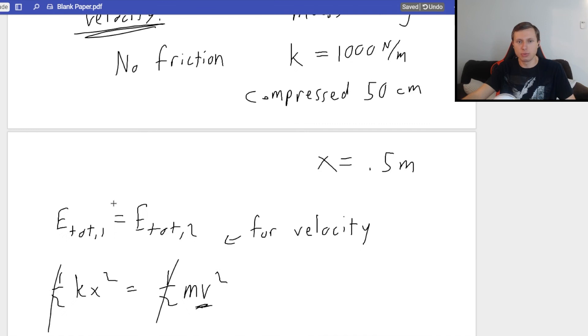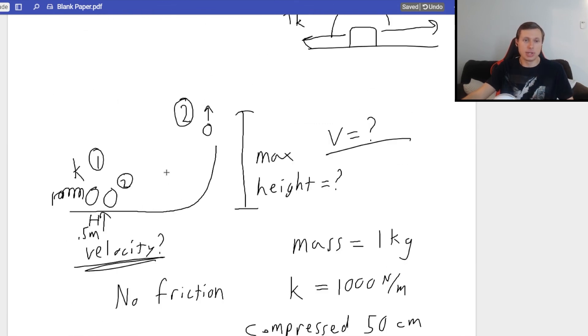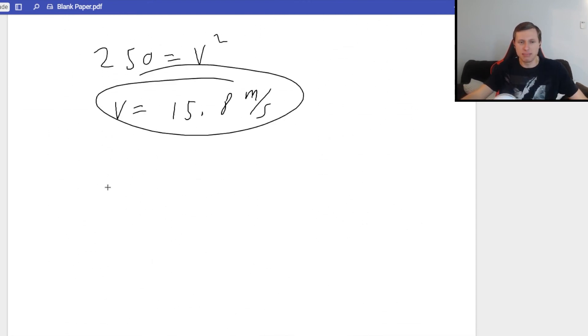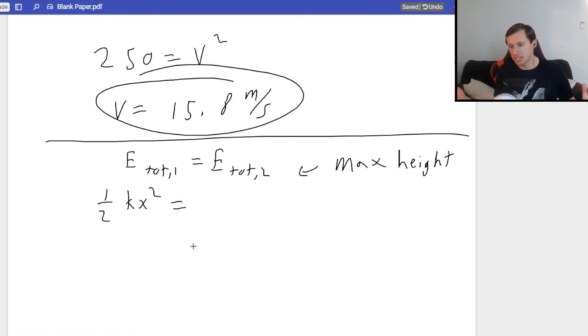So that's it for this question. There's still one more part though. I wanted to find the max height. So now I have a new point two. Point one can be the same. Heck, point two can even be when we have the max velocity, that one half MV squared. Since energies are equal here, energy is conserved, I can pick any two points I want. So I'm going to choose the same ones we chose before. One half KX squared. This is a separate question now. This is E total one equals E total two here still, but this time I'm trying to find max height.